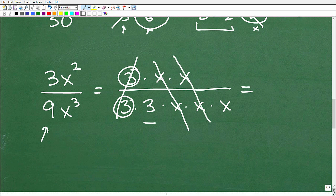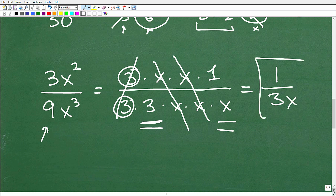So what's left over is this 3, this x, and nothing up in the numerator. But technically, there's always a 1 up there. So this particular fraction would simplify as 1 over 3 times x. That's what's remaining. And there you go.